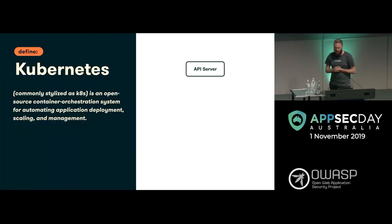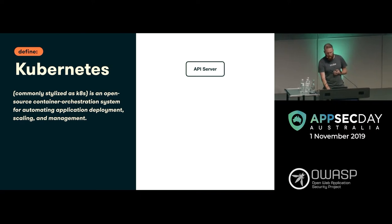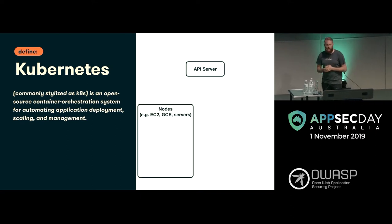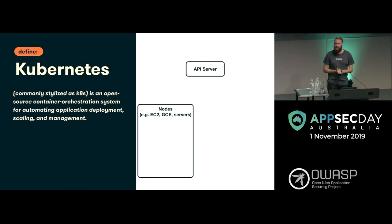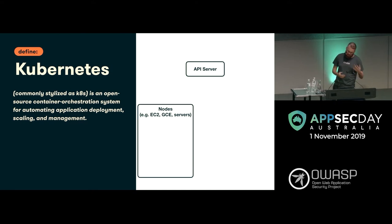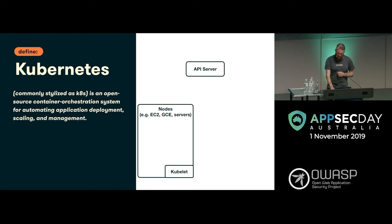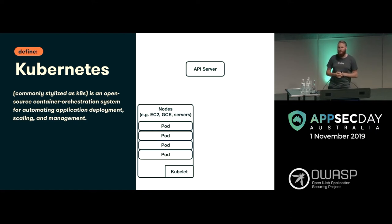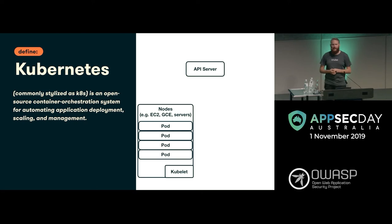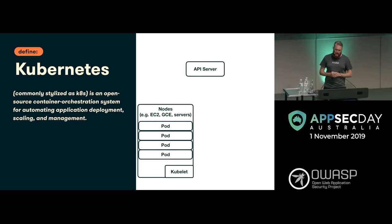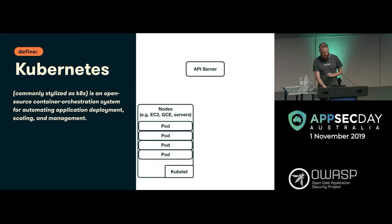How does it work in a little bit more detail? The API server talks to some things called nodes — the servers you're talking about: EC2, GCE, on-premise, pretty much any compute. There's a little thing called a kubelet, and the kubelet talks back to the API server saying, hey, have you got things for me to do? Based off that, it'll deploy some things called pods — those are the containers. It gets more complex than that, but you don't necessarily need to know it at this level.